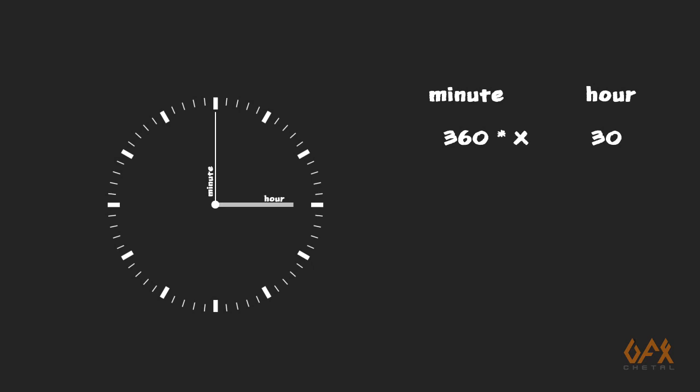A simple logic says that when the minute hand rotates 360 degrees, the hour hand rotates only 30 degrees. So when minute is out of 360 degrees, the hour hand rotates only 30 degrees. I multiply by a factor — hour equals 30 divided by 360, which is 1 divided by 12. So whenever you divide your minute rotation value by 12, it gives you the rotation of the hour hand.